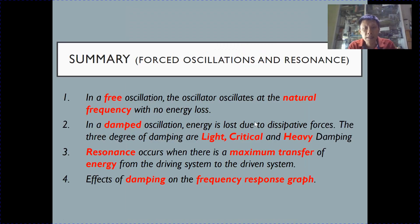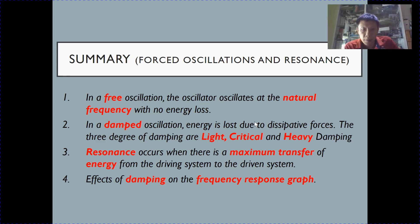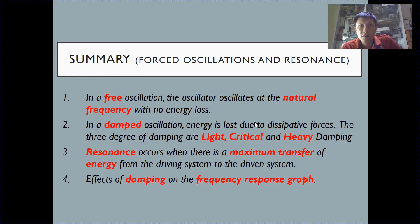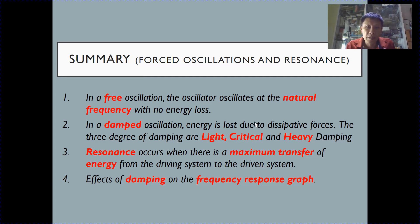To summarize this section on forced oscillations and resonance: first, in free oscillation the oscillator oscillates at its natural frequency with no energy loss. Second, in damped oscillation energy is lost, with three degrees of damping — light, critical, and heavy. Third, for forced oscillation, resonance occurs when the driving frequency matches the natural frequency of the driven system, giving maximum transfer of energy and maximum amplitude. Finally, we learned about the frequency response graph and the effects of damping on it.